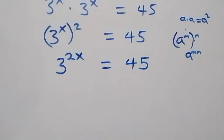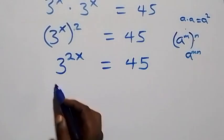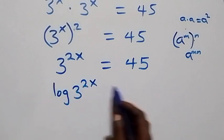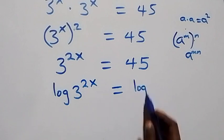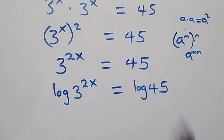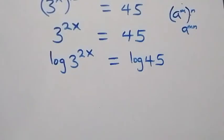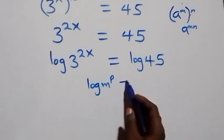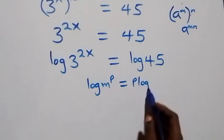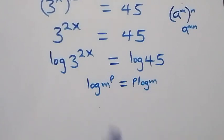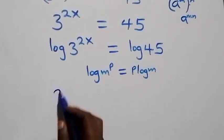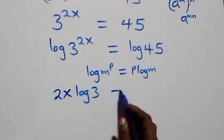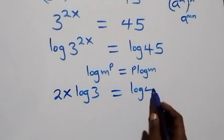The next step here: we take the log on both sides and we have log three raised to power two x equals to log forty-five. From here, we apply the power rule of logarithms — when we have log m raised to power p, this is the same as p log m. So what we have here becomes two x log three equals to log forty-five on this side.